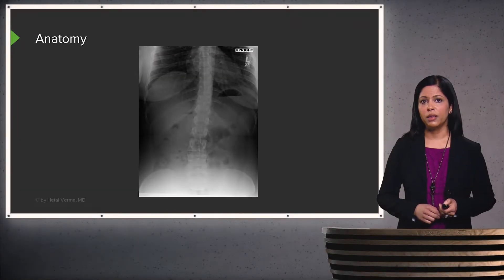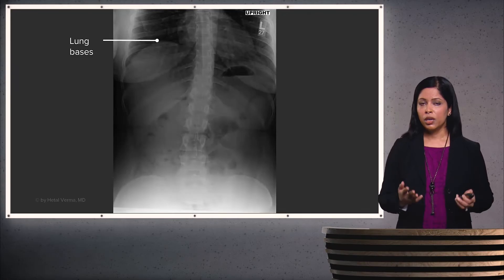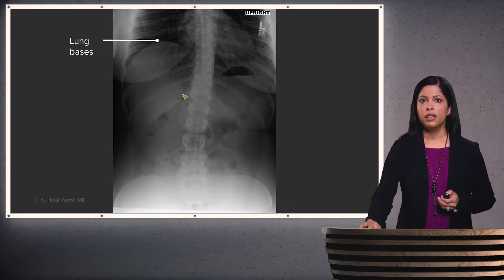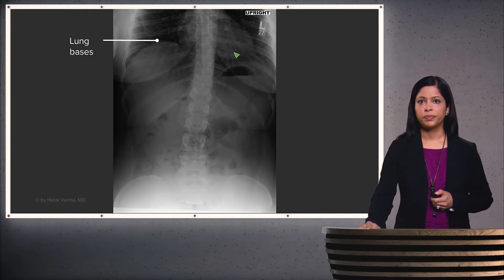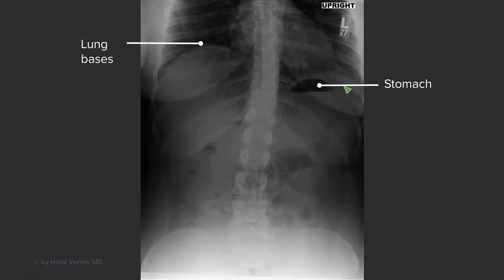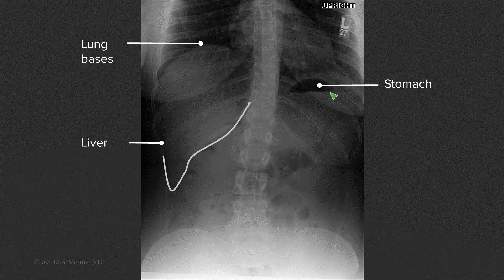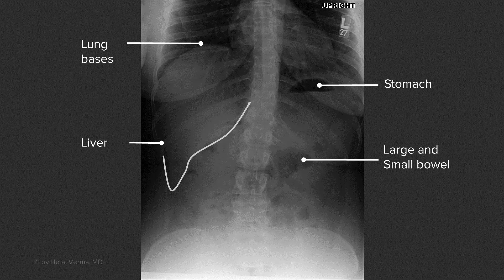Let's review some radiographic anatomy. I start by looking at the lung bases, which you can see on every abdominal radiograph. You can see the right hemidiaphragm and the left hemidiaphragm, and just above are the lung bases and a small portion of the heart. In the left upper abdomen you can see the stomach bubble, which usually has a little bit of air and an air-fluid level — which is normal. You can see the outline of the liver primarily in the right upper abdomen, and air within the large and small bowel.